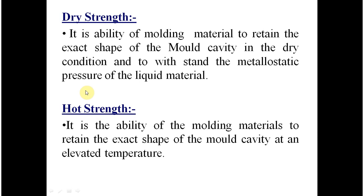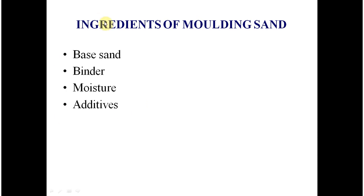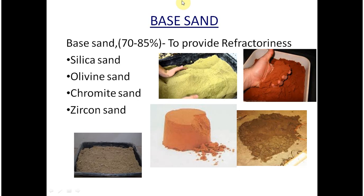These are the important properties we have learned. Next, we will learn about the ingredients of molding sand. The first ingredient is base sand, second is binder, third is moisture, and fourth is additives. Let me discuss them one by one, starting with base sand.